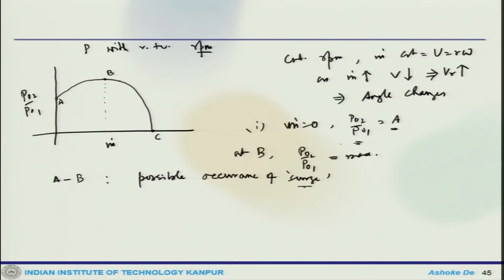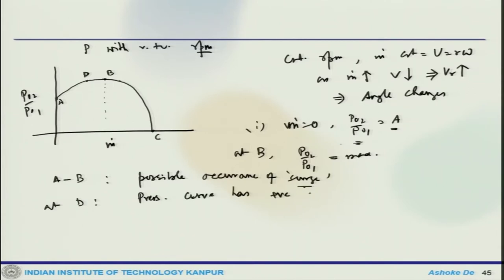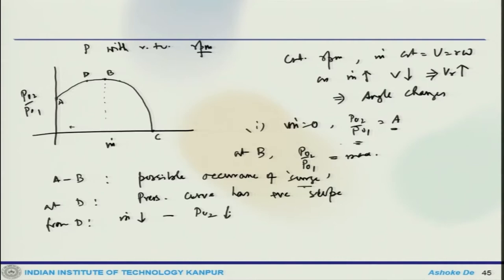Surge means there is an immediate or sudden drop in P₀₂ with violent aerodynamic instability. Let us say the compressor is operating at point D, where the pressure curve has a positive slope. If the mass flow rate drops from D, the compressor moves in that direction and the pressure P₀₂ also drops. This mass flow rate decrease is accompanied by a fall in the pressure rise.